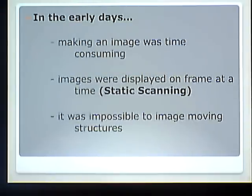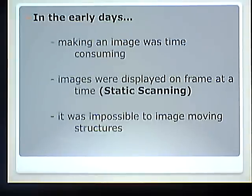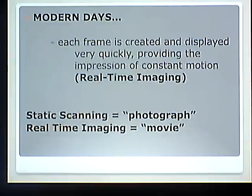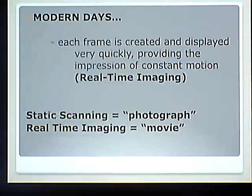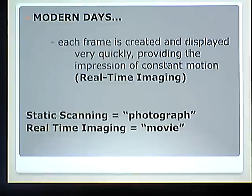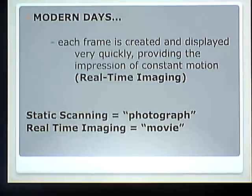In the early days, making an image was time-consuming. Images were displayed one frame at a time — we had static scanning. It was impossible to image moving structures. In modern days, technology is so advanced that each frame is created and displayed very quickly, providing the impression of constant motion or real-time imaging. This is like a live concert you're watching on TV — it's just like you're there. As you move the probe, what's on the screen moves with you. There's no longer a delay or a wait. So static scanning is a photograph or just an individual picture; real-time imaging is now that movie or moving picture.